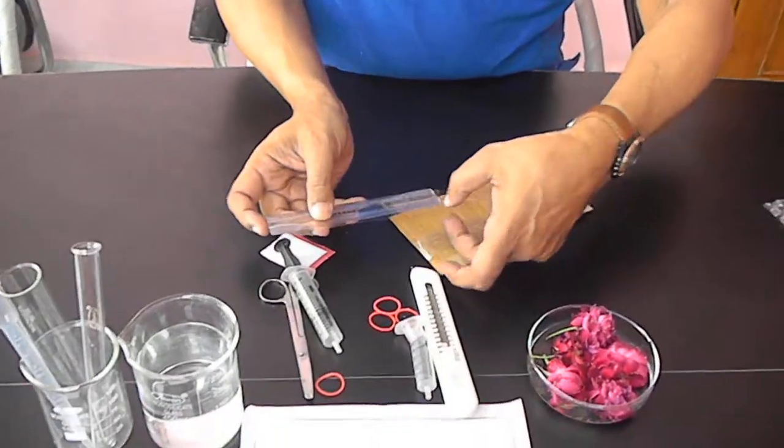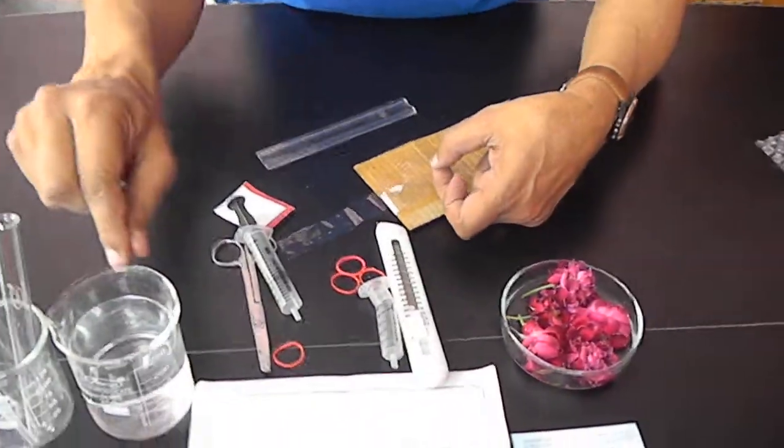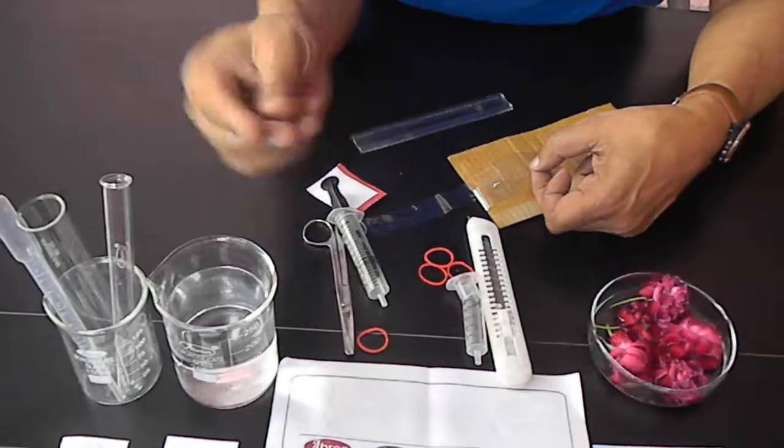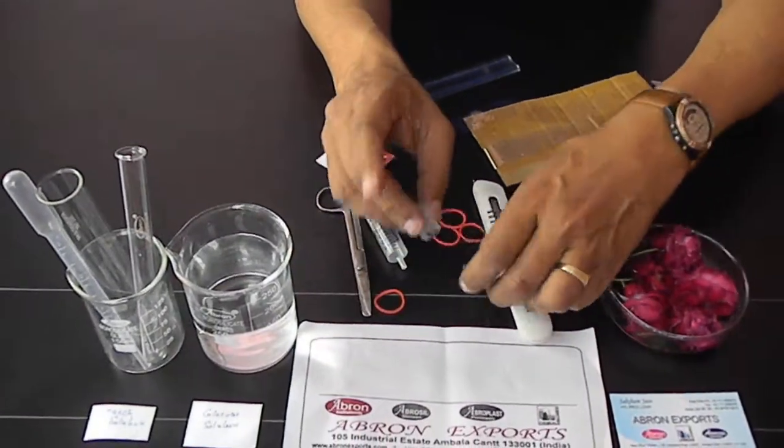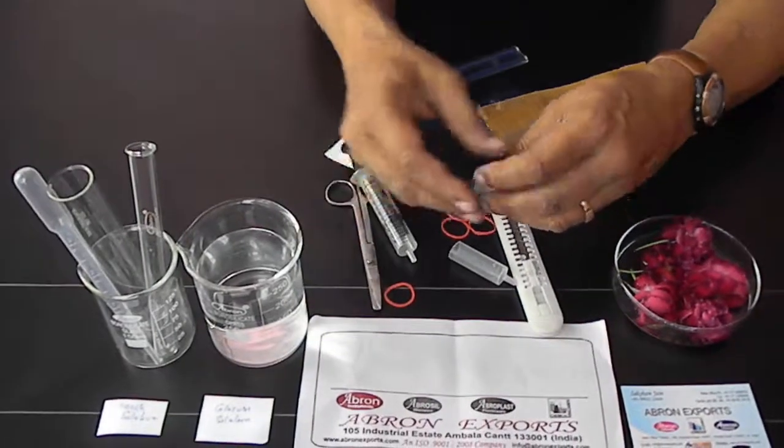Using the cutter, you cut it and then put it inside water, simple water, so that it becomes soft. In the meantime, you cut one syringe - only the top part - taking out the bottom part.